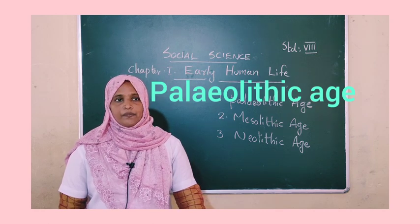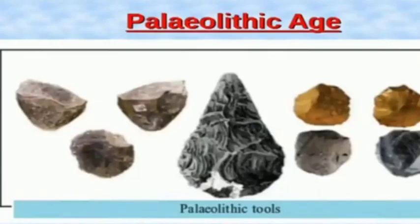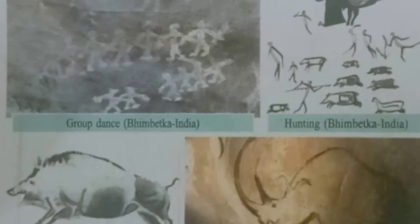Paleolithic age — man used big and rougher stone tools, and this period is known as the paleolithic age. Observe the picture. These are cave paintings drawn by the paleolithic man around 10,000 years back. These are the main evidences that tell us about early human life.